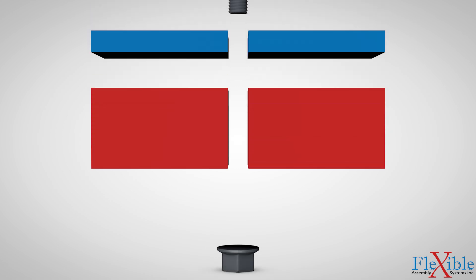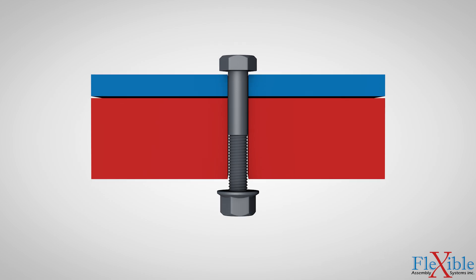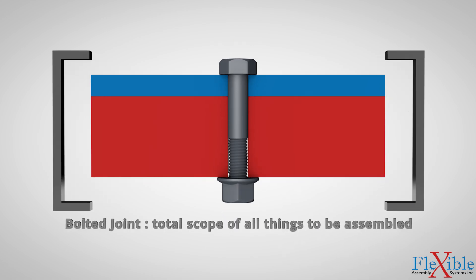Let's start off by exploring the threaded fastener. Its function is to clamp two or more components together by acting as a heavy spring between the components. Under heavy loads fasteners start to deform and change shape. They must be able to withstand the forces upon them to avoid failure. The total scope of all the components being clamped together and the fastener is called the bolted joint.